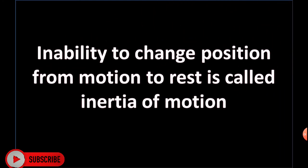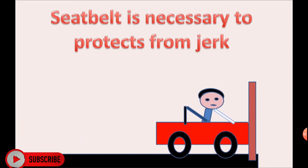Inability to change position from motion to rest is called inertia of motion. Seat belt is necessary to protect from jerk because inertia of motion causes it opposed to come at rest and passenger or driver get fall down and may hurt.